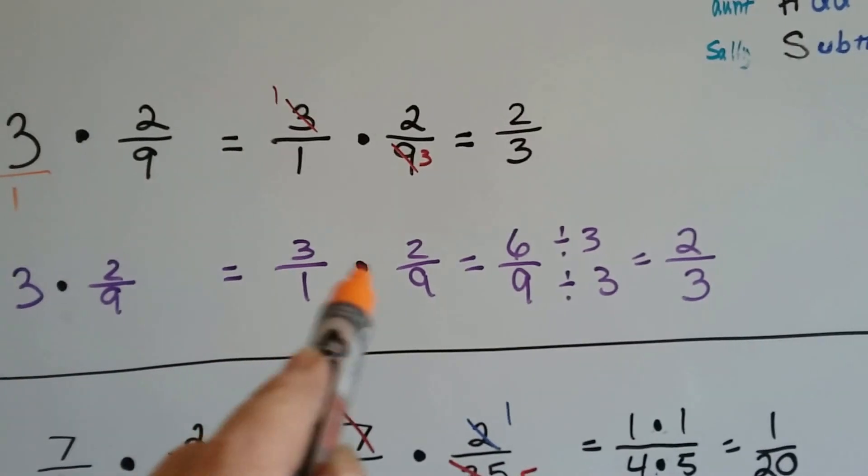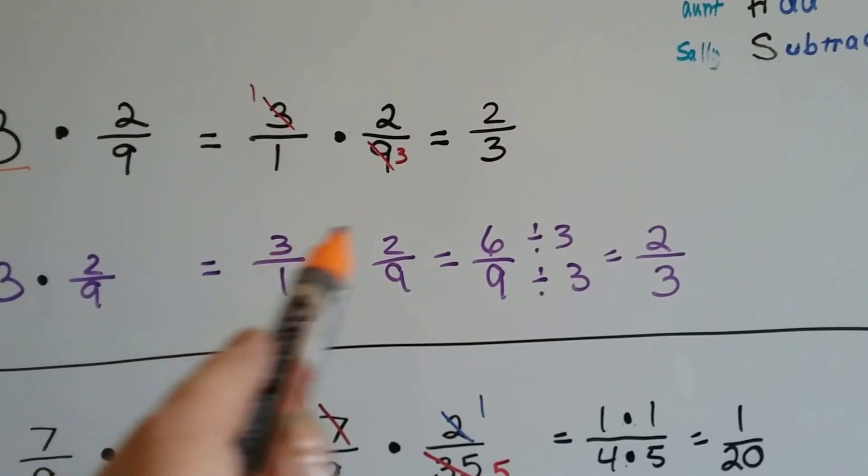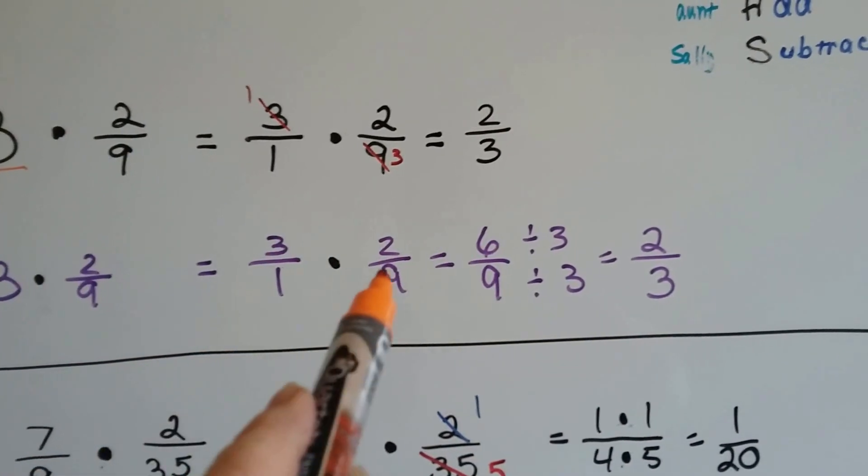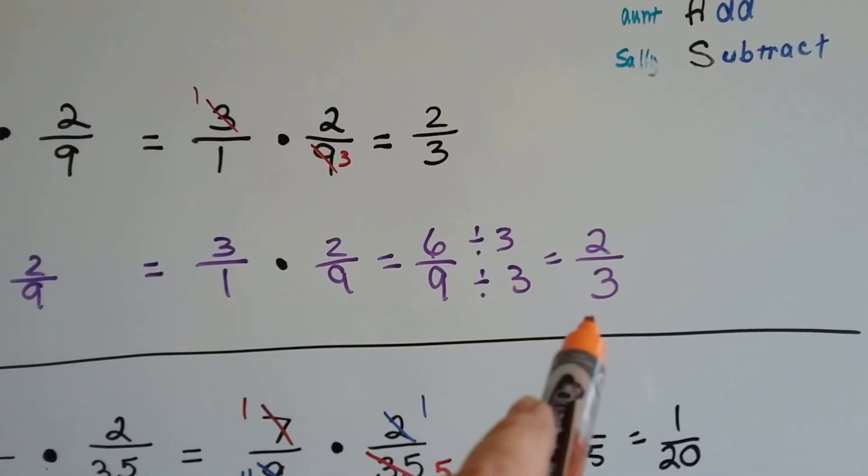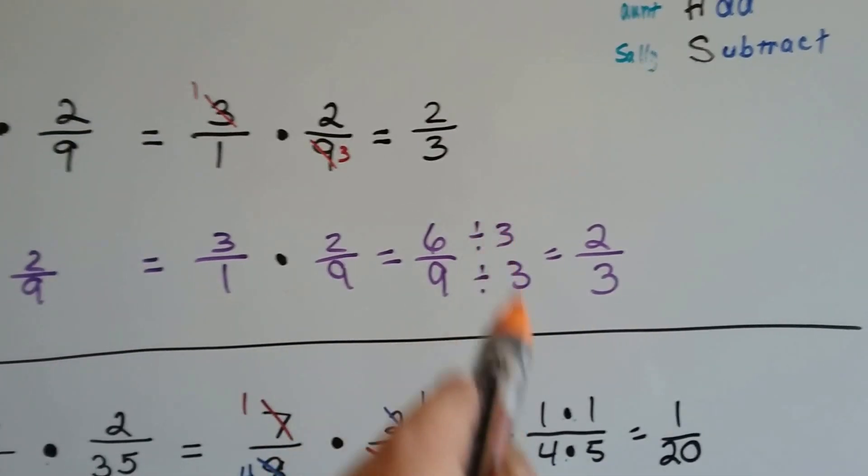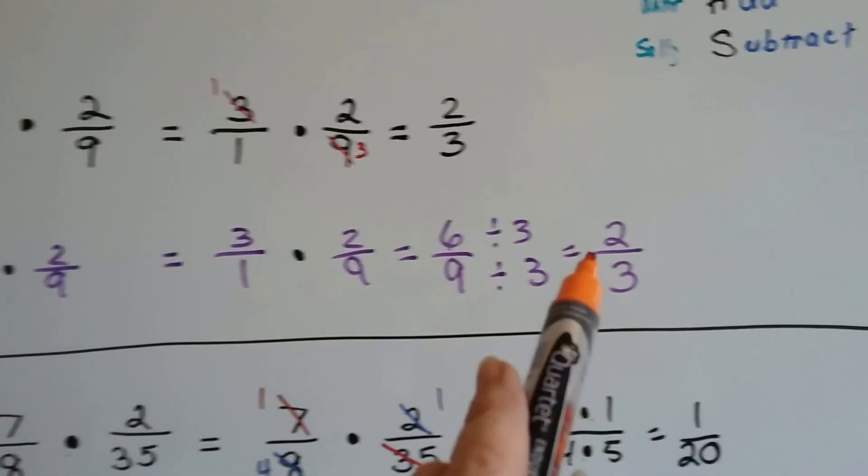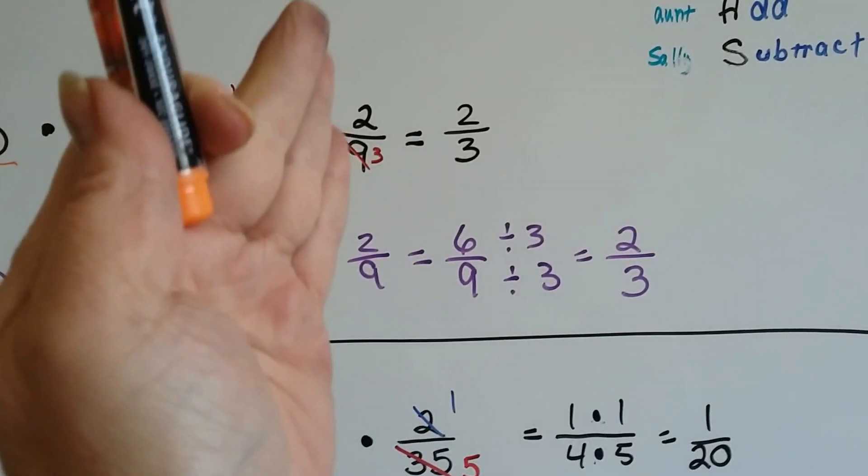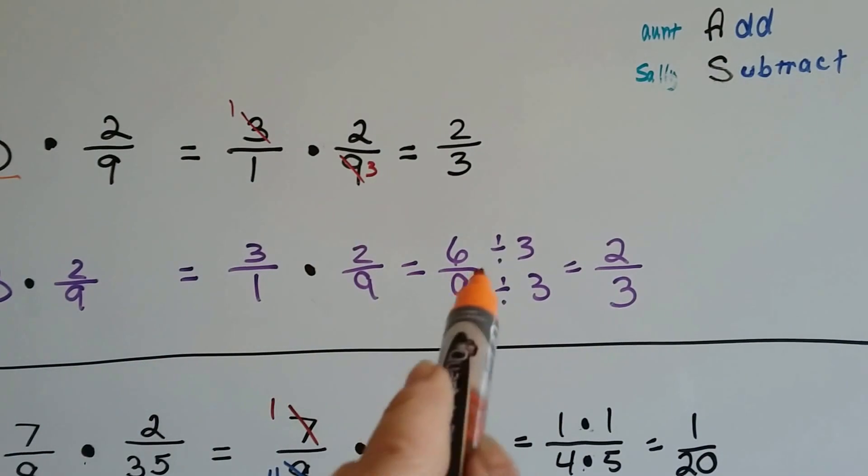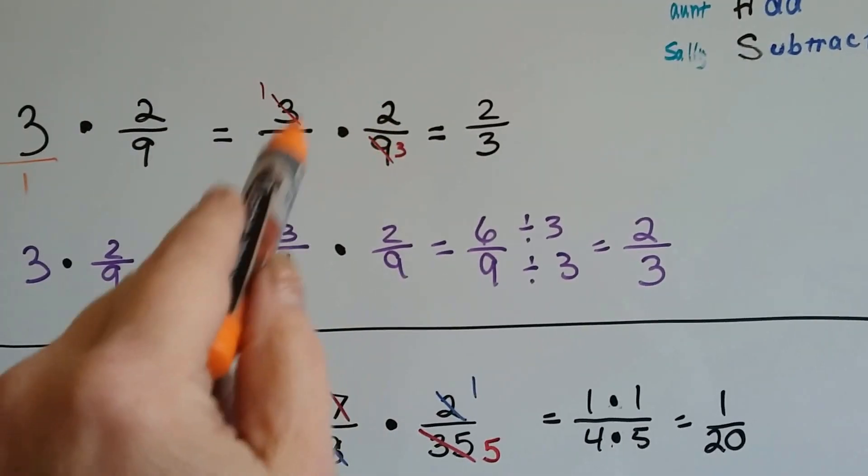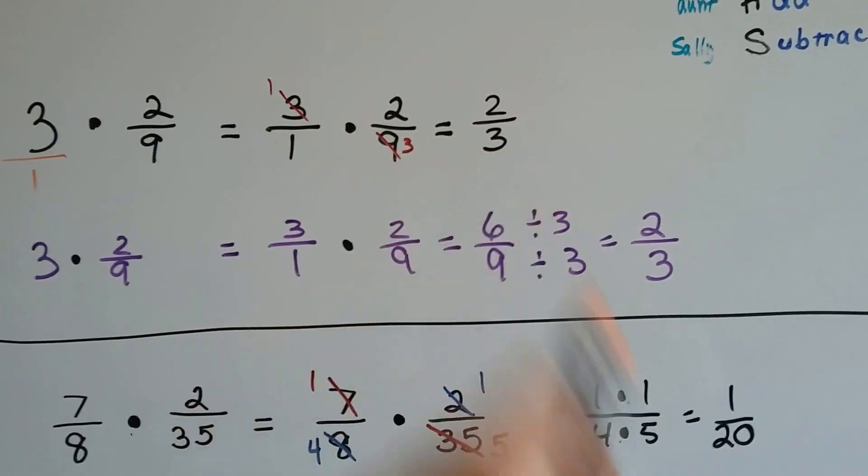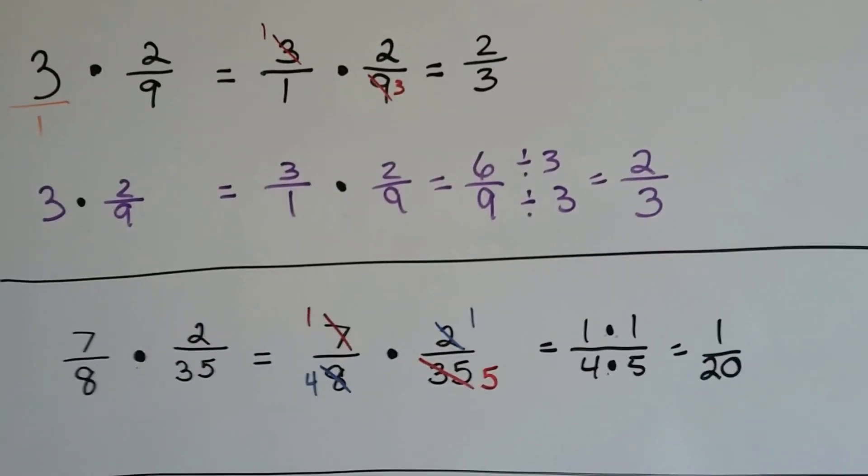If we do it this way, three over one times two-ninths, we get three times two is six over one times nine is nine, and now we need to simplify it to its lowest terms and divide both sides by three, and then we get the two-thirds. So you can see I tried to line them up the same, and this creates more writing and more work. If you can cancel out, you'll have it already reduced to its lowest terms when you're finished multiplying the fraction.